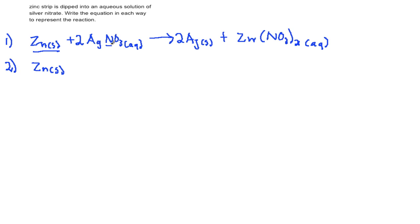However, Ag and NO3 become ions, so we keep the coefficient for both Ag and NO3, so it would be 2 Ag plus 1 aqueous plus 2 NO3 minus 1 aqueous. So what we do is we broke this ionic compound into its cation and anion.